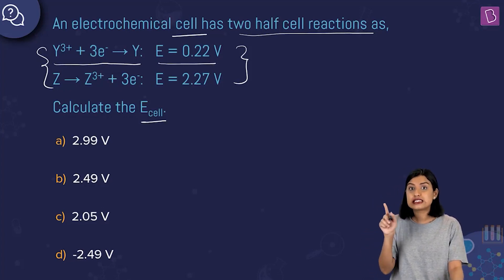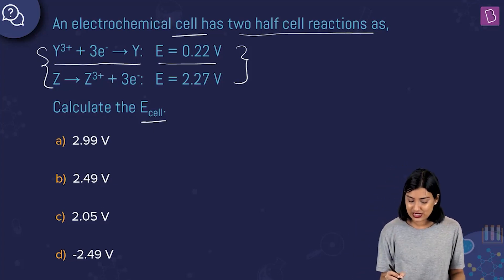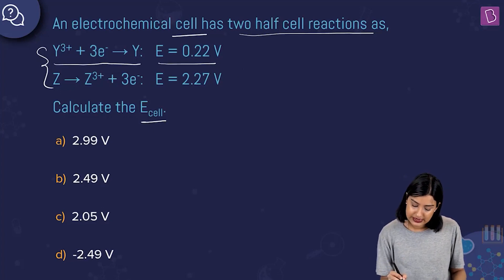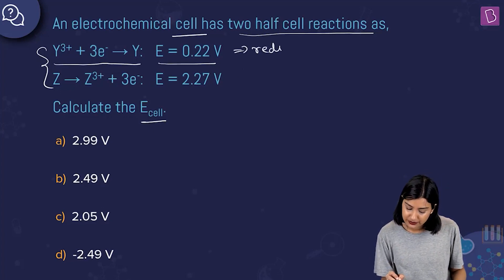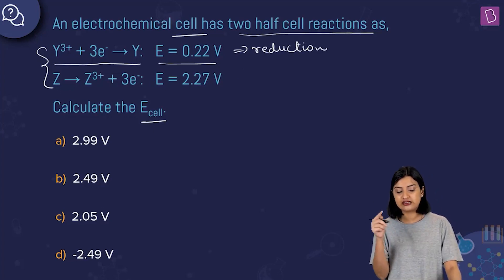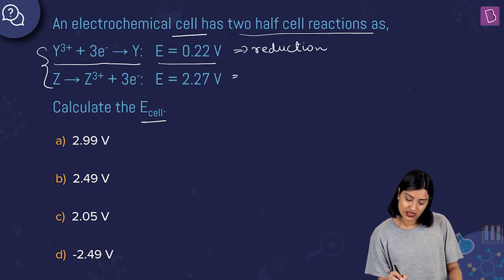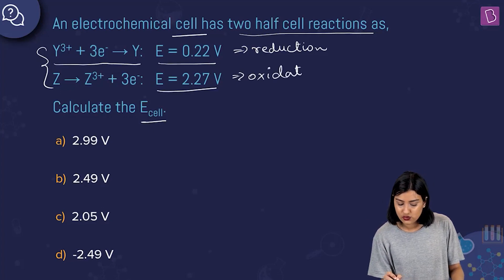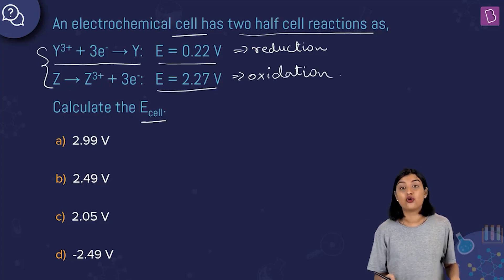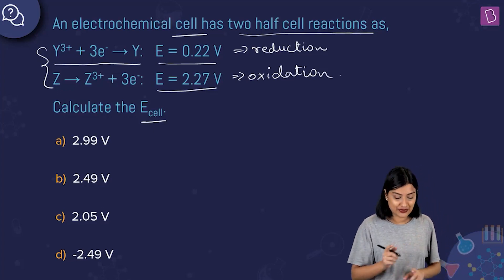The second reaction is Z → Z³⁺ + e⁻, going from 0 to +3, which is oxidation. The potential given for this oxidation reaction is 2.27 volts.